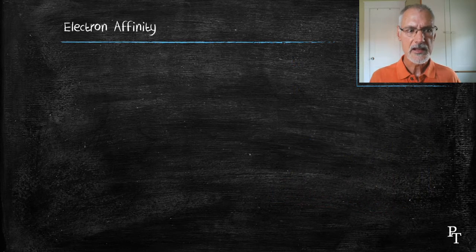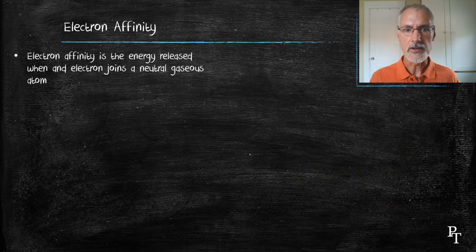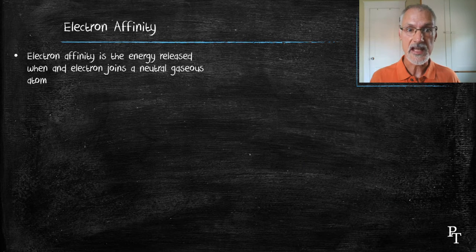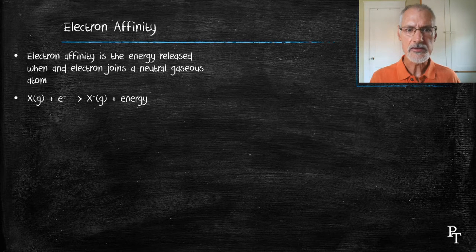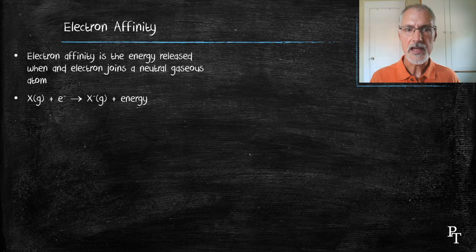Electron affinity is the energy released when a neutral atom gains an electron. And again, it's in the gaseous state. Here you'll see the equation. Notice that energy is on the other side of the equation. Energy here is a product.